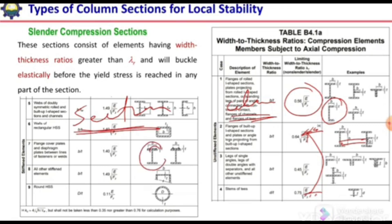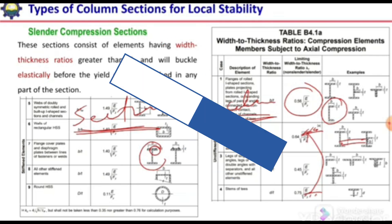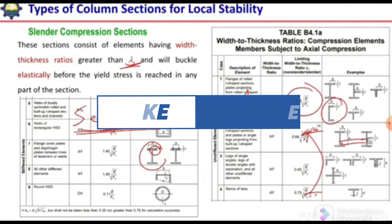For compact, non-compact, and slender section classification, we look at the section itself — specifically the slenderness ratio of the part of the section. If b/t is less than λp, it is a compact section and the whole section will yield. If it is greater than λp but less than λr, it is a non-compact section where some part yields and some does not. If b/t is greater than λr, the whole section remains in the elastic range and it is classified as a slender compression section.